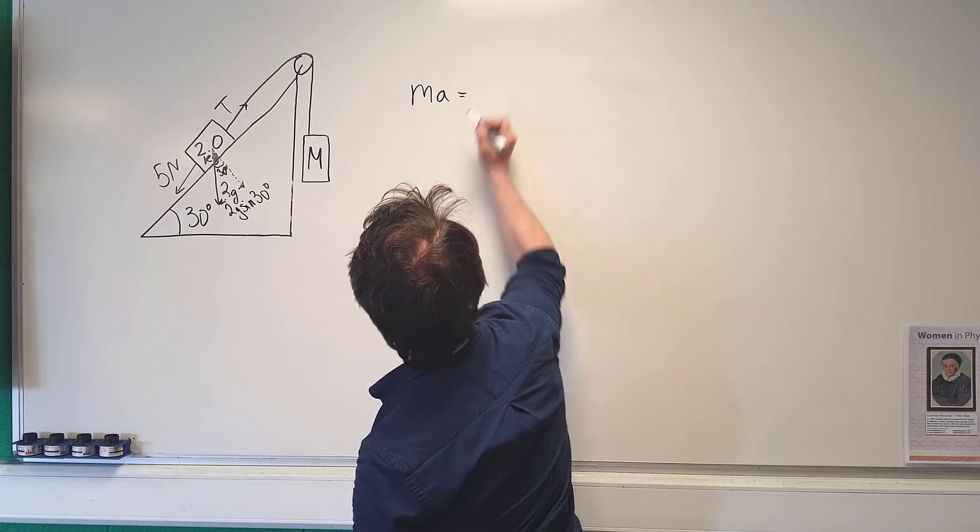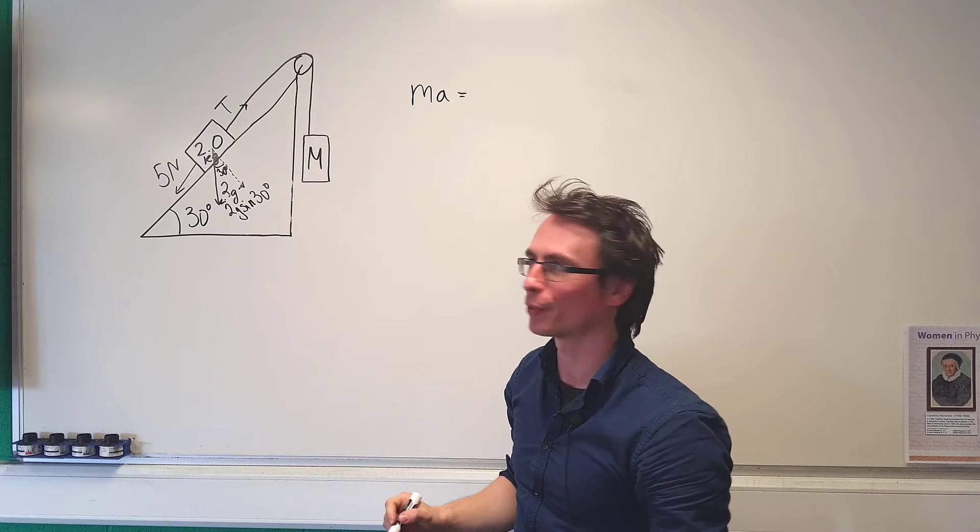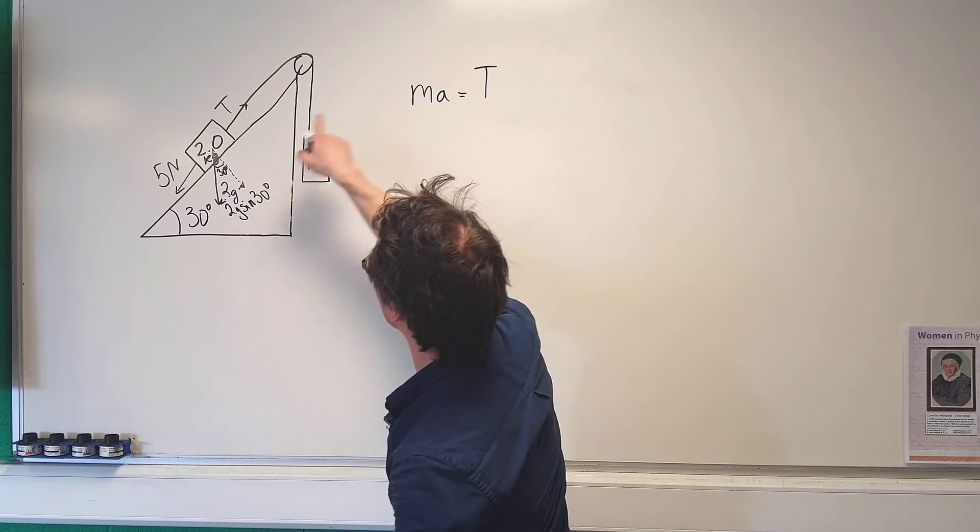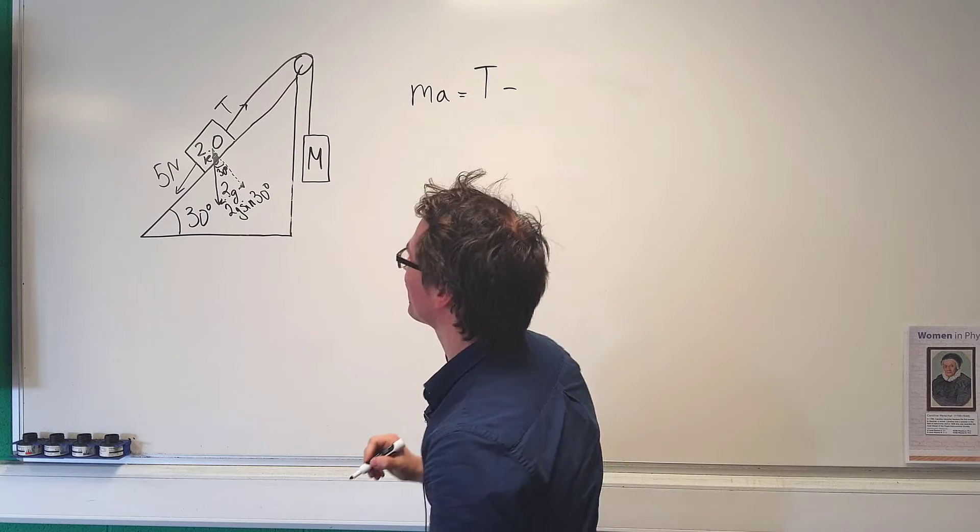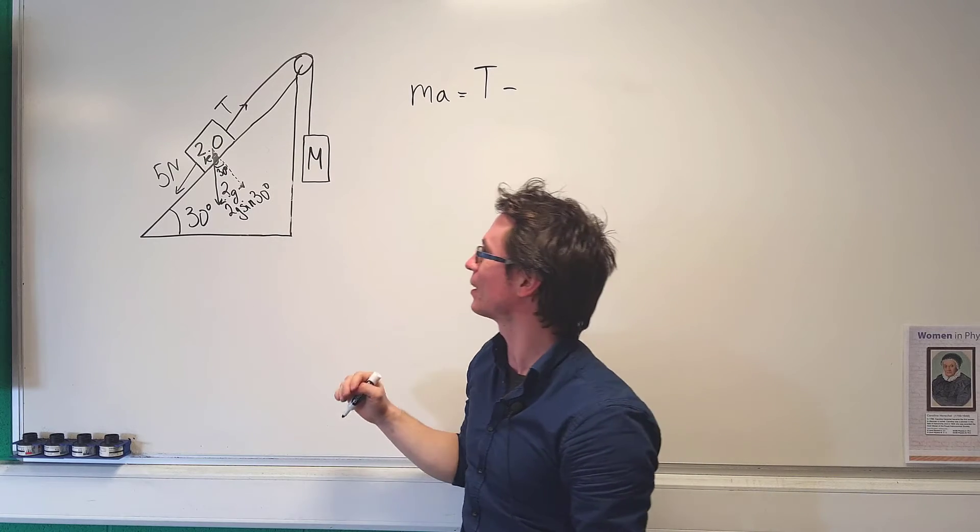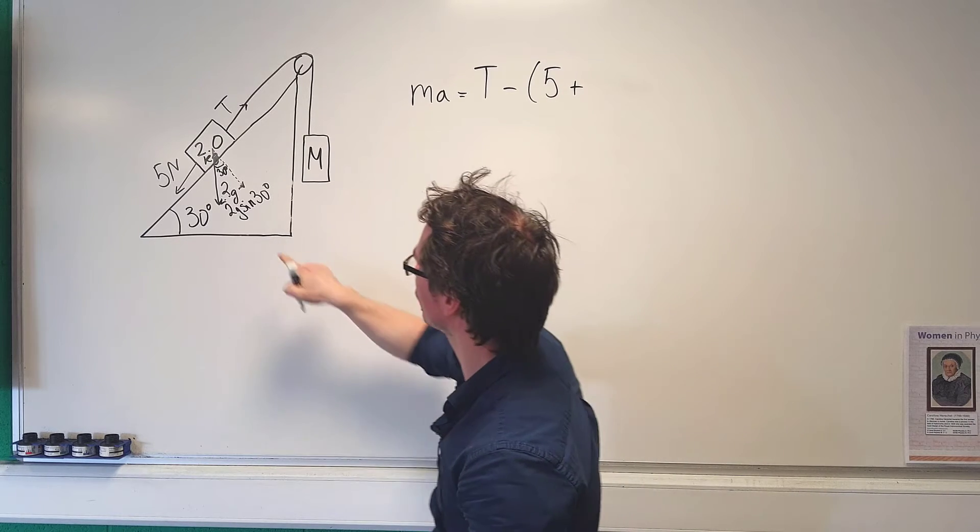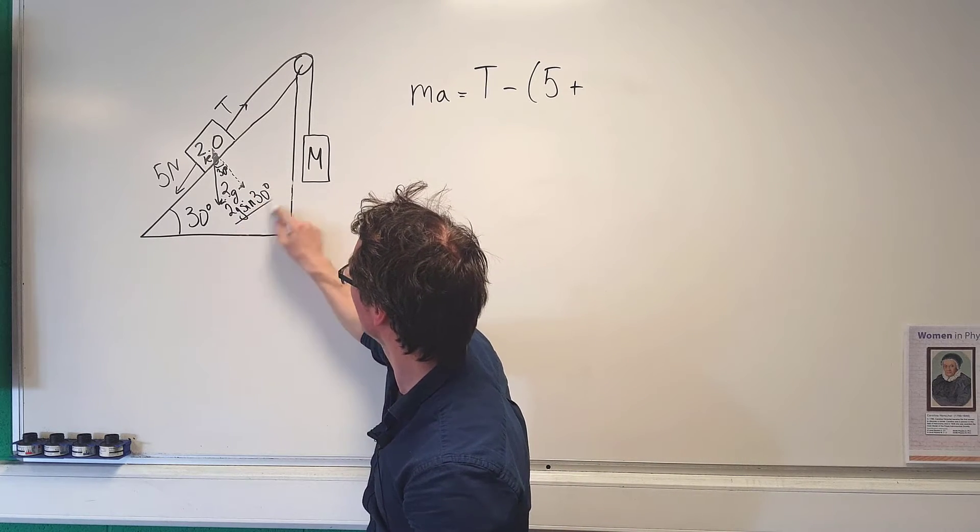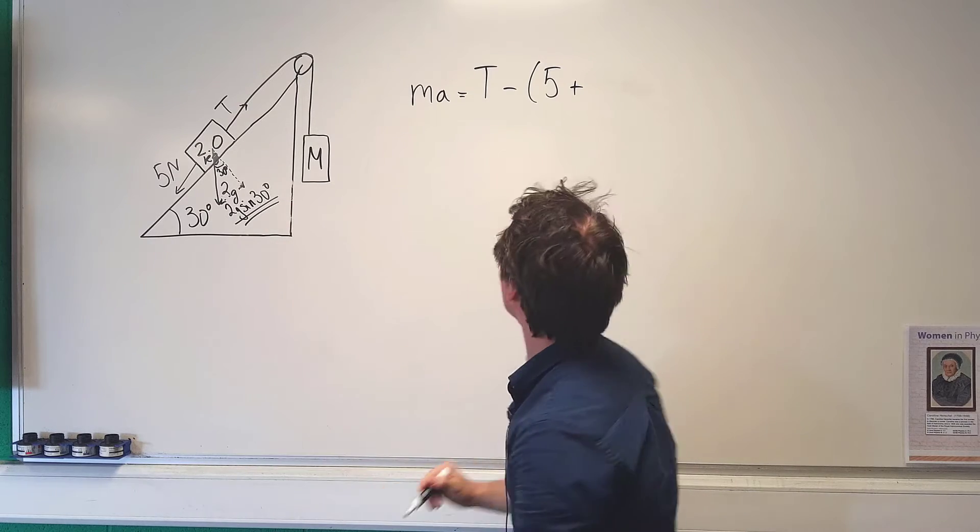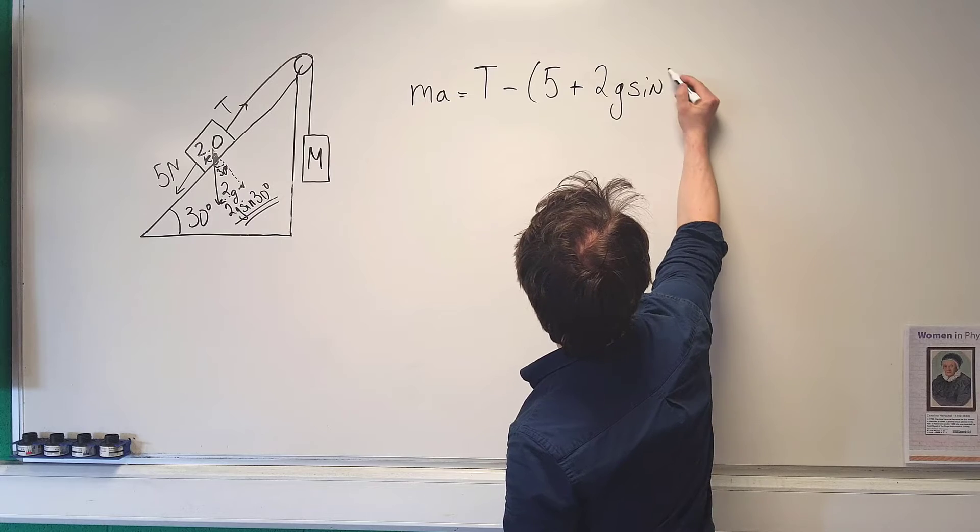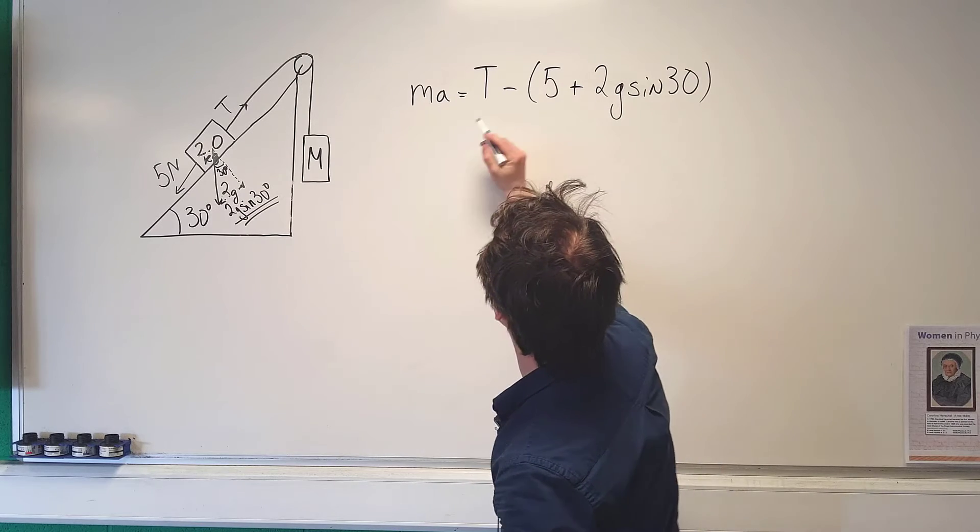We have ma will be equal to sum of all of those forces and we're going to have the tension which is acting this way. From that we need to take away all the forces acting in the opposite direction. So first of all we're going to have the 5 Newton force and also we're going to have this force here which is 2g sine 30.